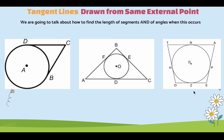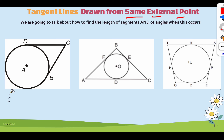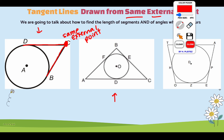More specifically in this lesson, we're going to be talking about tangent lines that are drawn from the same external point. In this first example, we have tangent line DC and tangent line BC, and you can see they both meet at the same external point. In a more complex diagram, it's really important to be able to pick things apart. For example, we can have tangent lines drawn from the same external point A, but there's a lot more going on.